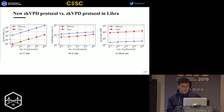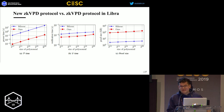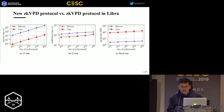The figures show the comparison between our new ZKVPD protocol and the previous one based on bilinear pairing in the Libra paper. For the prover time, our prover time is much faster — at least 100 times speedup. The verification time in the new ZKVPD protocol is also faster than the previous one. However, the proof size is larger because the constant factor in our new ZKVPD is very large due to the tests required for the encoding, which is reasonable.